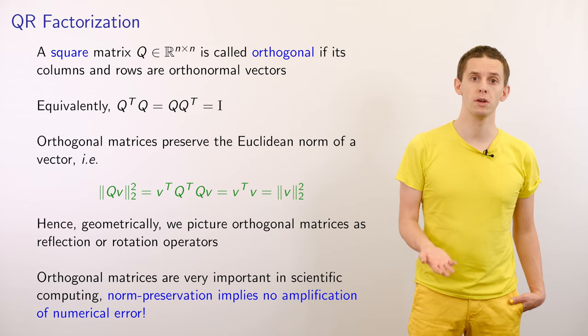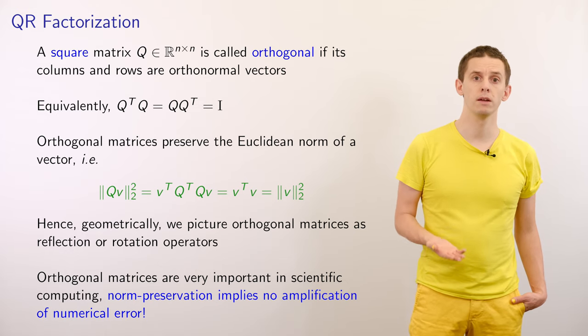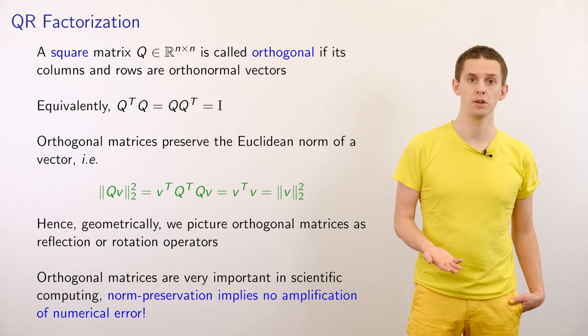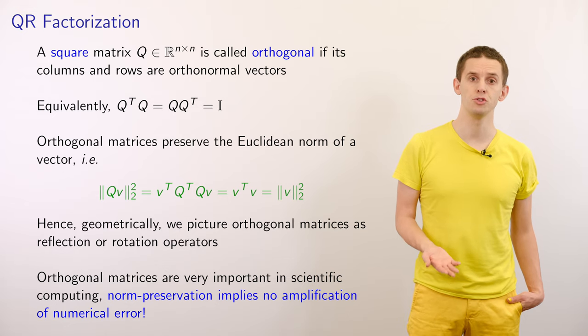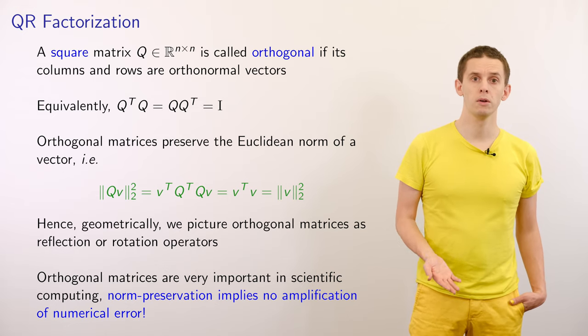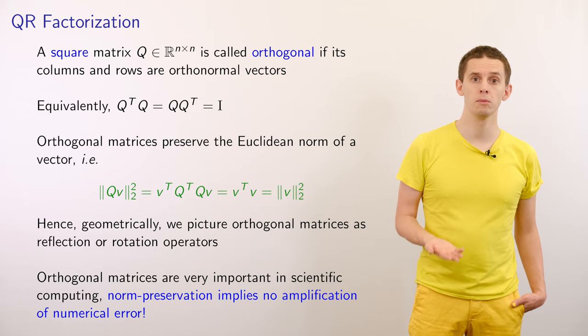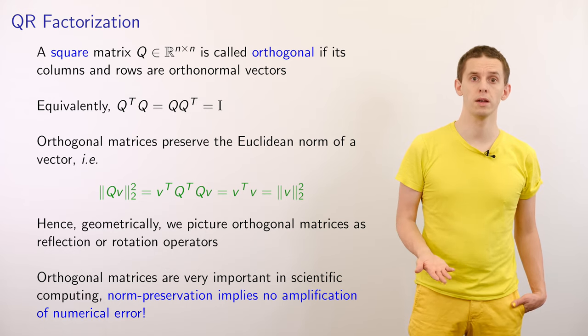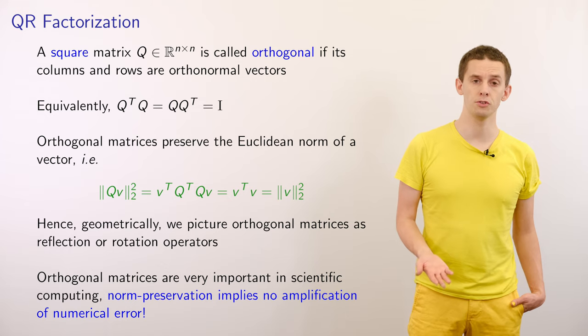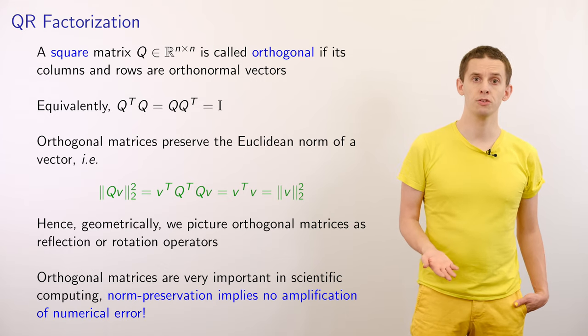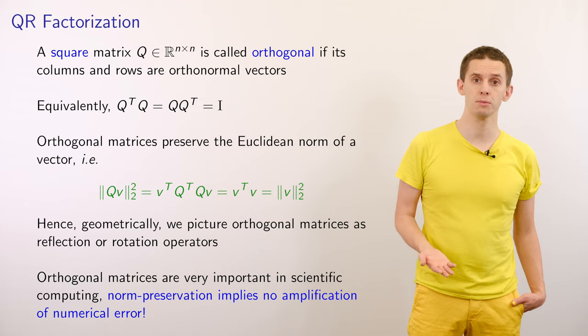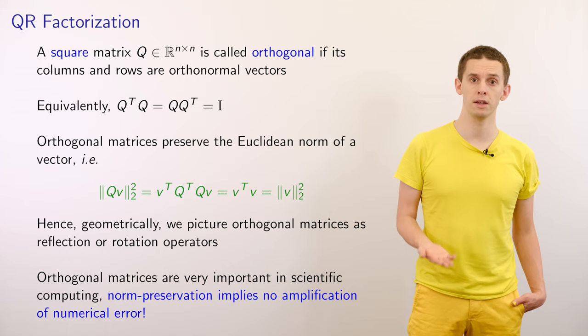We call an n-by-n matrix Q orthogonal if its rows and columns form orthonormal vectors. Specifically, let's look at two columns of this matrix that we'll call QI and QJ. Then the dot product of QI and QJ should be equal to 0 if I is not equal to J, and 1 if I is equal to J. In matrix form, that tells us that Q transpose times Q is equal to the identity.